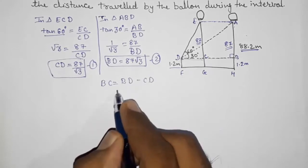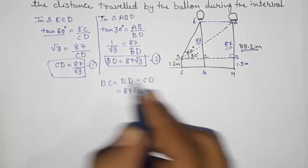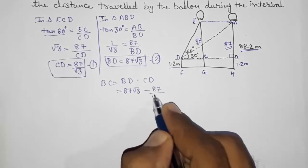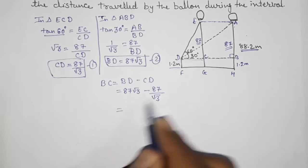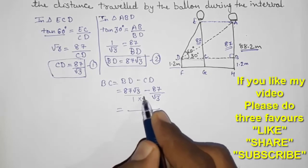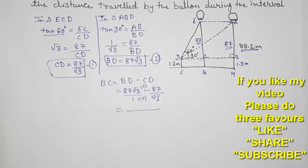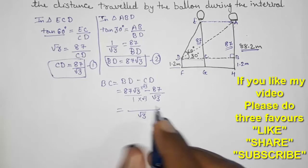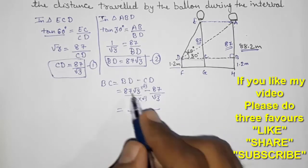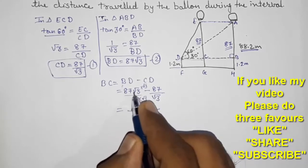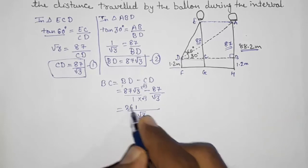BD that is 87 into root 3 minus CD that is 87 by root 3. So we have to find out the LCM, so we are going to multiply this here into root 3 into root 3. So let us start: in denominator root 3 this will become 3, root 3 into root 3 is 3. 3 sevens are 21 to carry, 3 eights are 24, 25, 26, 261 minus 87.